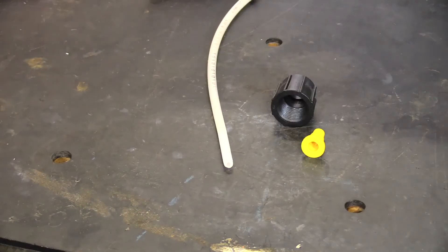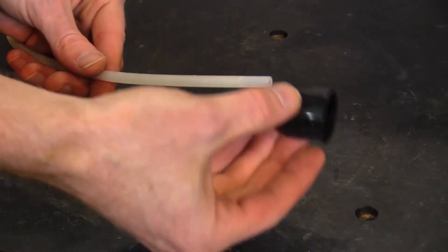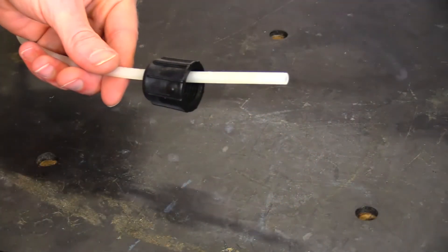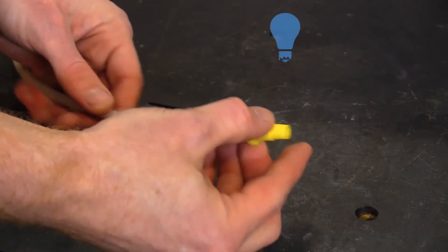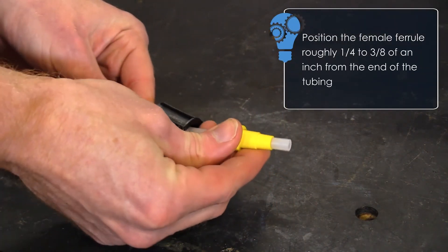Now for 1 1/4 inch tubing. Again, insert the tubing through the coupling nut first. Position the ferrule so roughly 1 1/4 to 3/8 inch of tubing is visible.